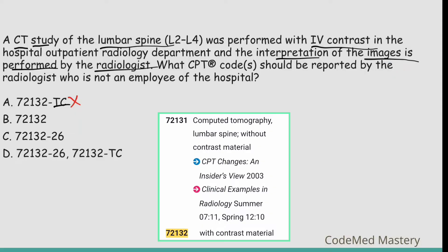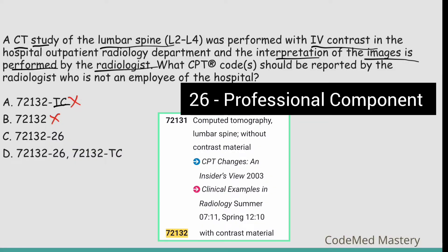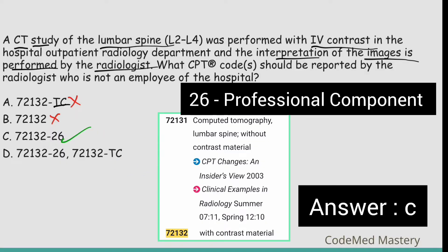Option B has no modifier, but since the radiologist is interpreting the images, a modifier is required — eliminate option B. Option C uses modifier 26 (professional component), appended when a physician performs interpretation of results. That applies here. Option D uses modifier TC, which is wrong. The right answer is option C, 72132-26.